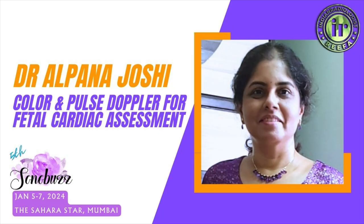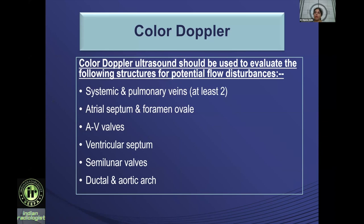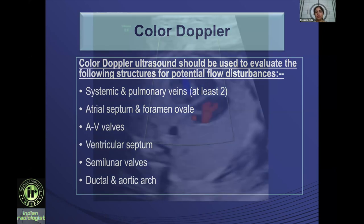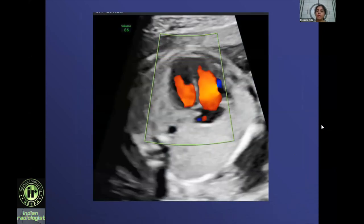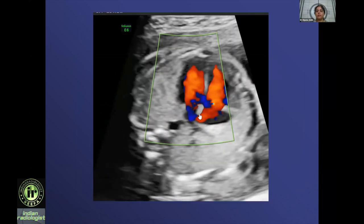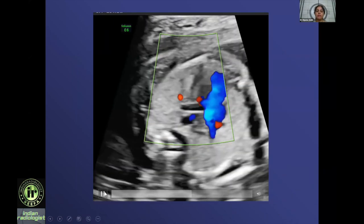The use of color Doppler is important to be well versed with. Color imaging is useful for systemic and pulmonary veins to see the flow, across the AV valves and ventricular septum especially if there is a VSD, a muscular VSD, semilunar valves, and the ductal and aortic arch.